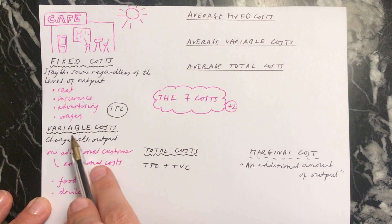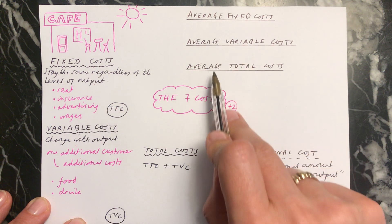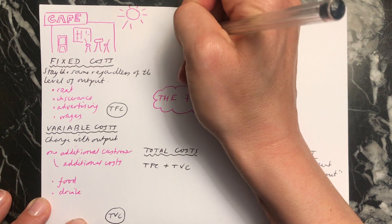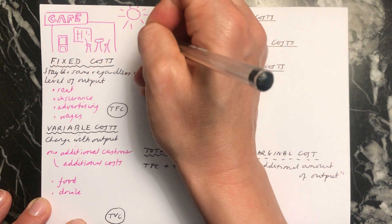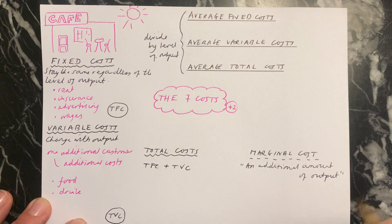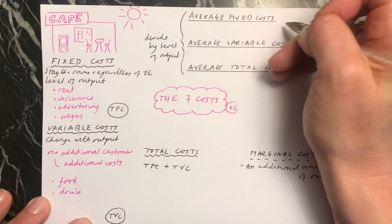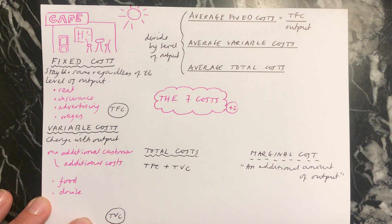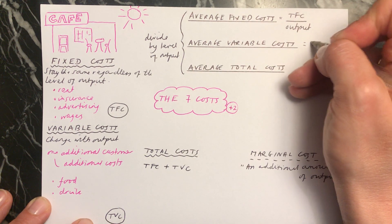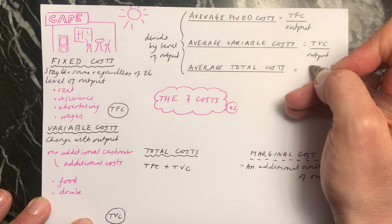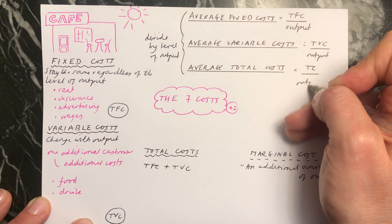When you're looking at your fixed costs, your variable costs, and your total costs, you can also look at the average fixed, variable, or total cost. If you're working out the average, you're just dividing by the level of output — how many people you're serving in your cafe. So your average fixed costs are your total fixed costs divided by output, your average variable costs are your total variable costs divided by output, and your average total costs are your total costs divided by output.